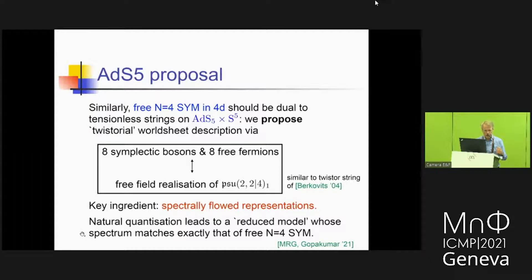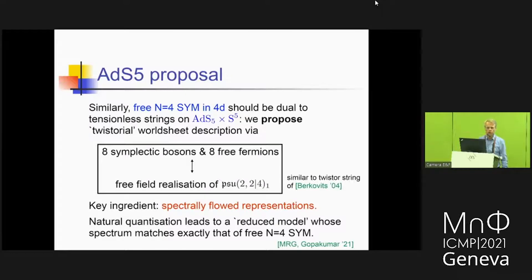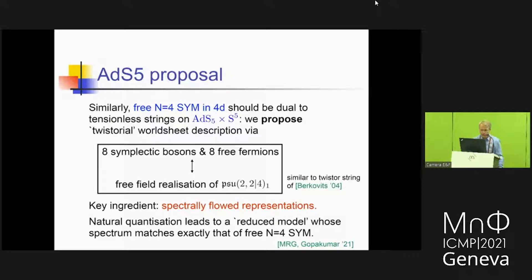The key ingredients are the spectrally flowed representations. What I want to highlight is that there is a very natural quantization of this world sheet theory, and if you follow it, you produce exactly the spectrum of N=4 super-Yang-Mills in the planar limit. Our world sheet theory seems to reproduce at least the spectrum of N=4 at the free point correctly, which is an important step towards believing that this is the correct description. This is very recent work with many open problems and questions. The story for ADS-3 is pretty complete; for ADS-5, this is a proposal that we believe is on the right track.